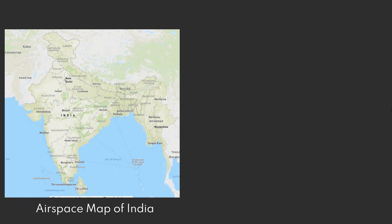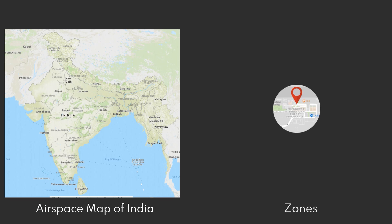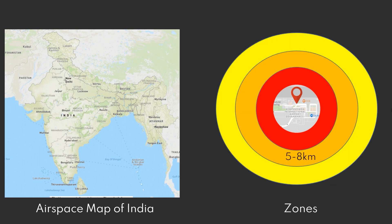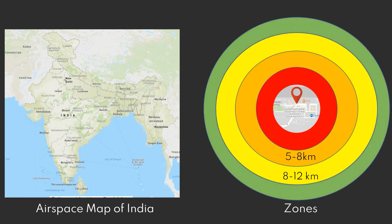The drone airspace map is an interactive map of India that demarcates the red, yellow and green zones across the country. From the figure, you can see the airport at the center — within 0 to 5 km lies the red zone, followed by the yellow zone which is divided into two: one within 5 to 8 km and the other within 8 to 12 km. And finally we have the green zone. Anyone planning to operate a drone should mandatorily check the latest airspace map for any changes in zone boundaries.